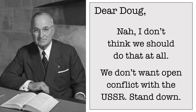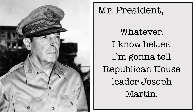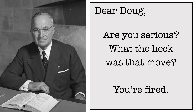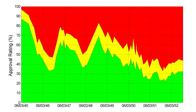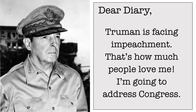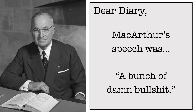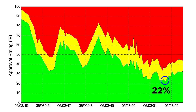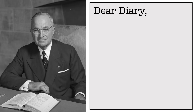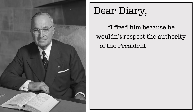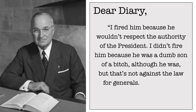MacArthur then went behind Truman's back and promoted his plan to Republican House leader Joseph Martin, who leaked it to the press. Furious, Truman fired MacArthur from his commands. MacArthur's dismissal was among the least popular decisions in presidential history, and Truman's approval plummeted. As he faced calls for his impeachment, MacArthur returned home to a hero's welcome and addressed a joint session of Congress, a speech that the president called "a bunch of damn bullshit." Truman's approval rating fell to 22 percent in 1952, which was, until George W. Bush in 2008, the all-time lowest approval mark for an active American president. Years later, Truman defended his action by stating, "I fired him because he wouldn't respect the authority of the president. I didn't fire him because he was a dumb son of a bitch, although he was, but that's not against the law for generals. If it was, half to three quarters of them would be in jail."